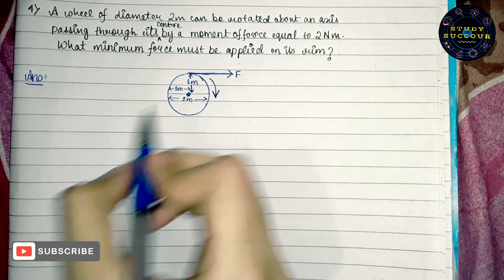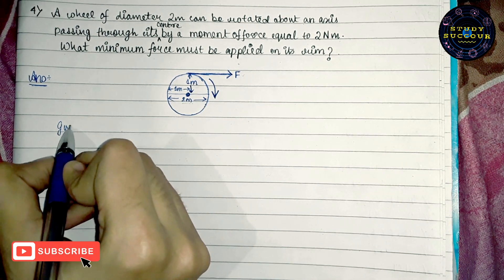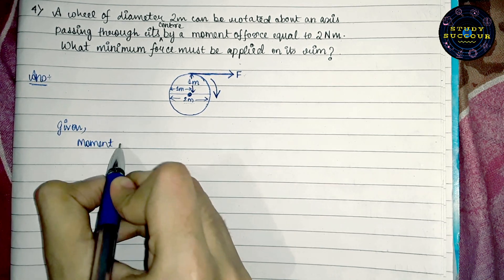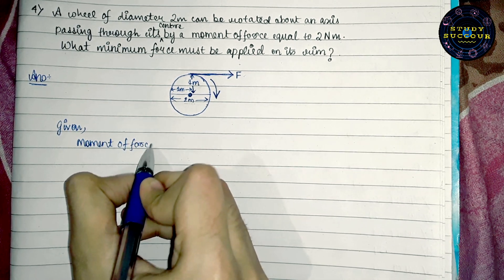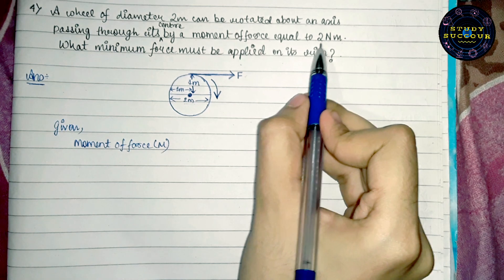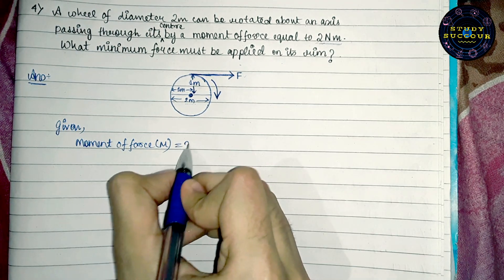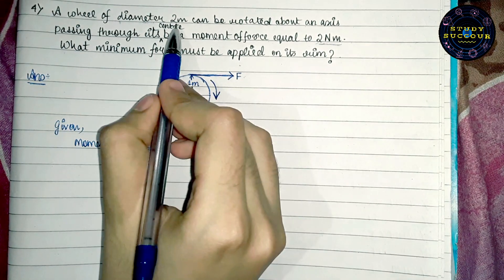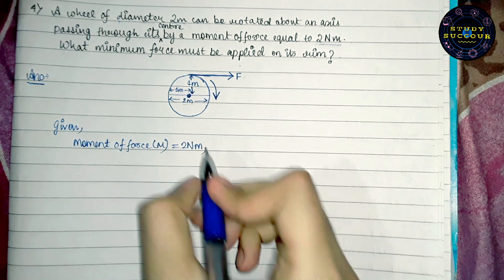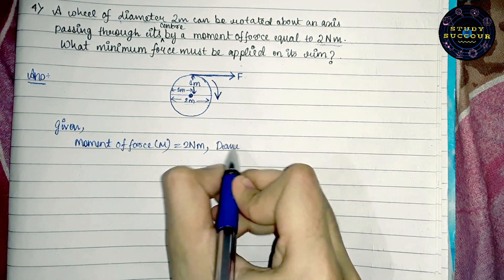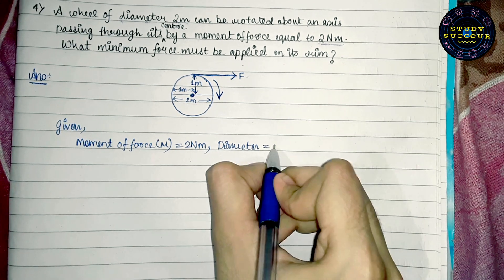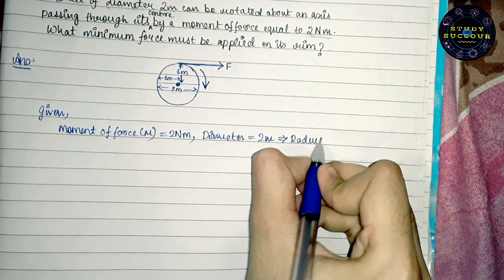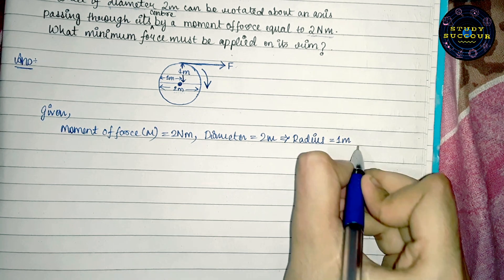From this problem, from this diagram, we can conclude that our given parameters are moment of force which is M which equals to 2 newton meter, and the diameter of the wheel is 2 meters and hence, the radius of the wheel will be 1 meter.